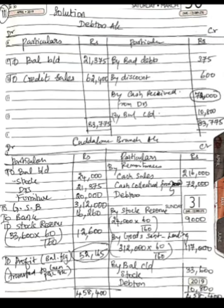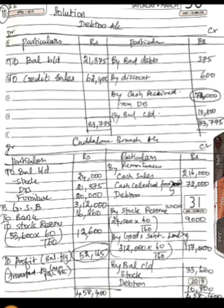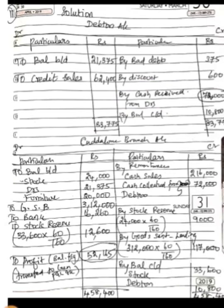The total on the debit side comes to 83,775. The balancing figure — cash received from debtors — comes to 72,000. We have now obtained the cash received from debtors, and we can proceed with the branch account.